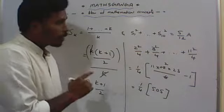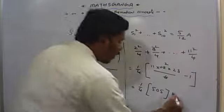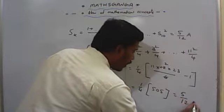505/4. But by comparing it with 505/a you need to get the value of a. So this is equal to 505/12.